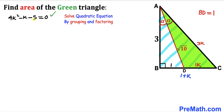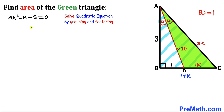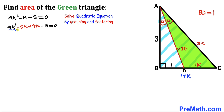We now have the quadratic equation 4K² − K − 5 = 0 and will solve it by grouping and factoring. Multiplying the end coefficients: 4 × 5 = 20, and we need two numbers with a difference of 1, giving us −5 and +4. So we rewrite −K as −5K + 4K, then factor: K(4K − 5) + 1(4K − 5).